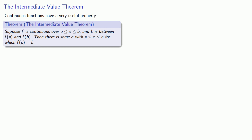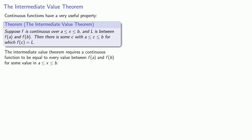That's quite a mouthful, but what it comes down to is the Intermediate Value Theorem requires that a continuous function be equal to every value between f(a) and f(b) for some value in the interval between a and b.